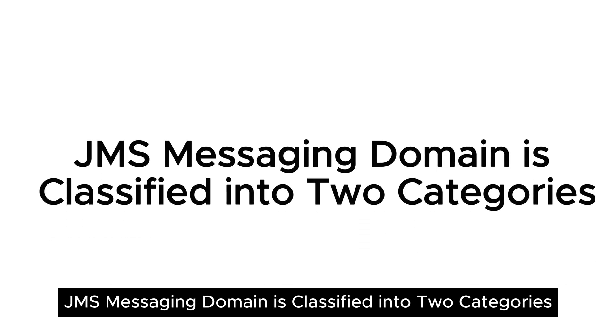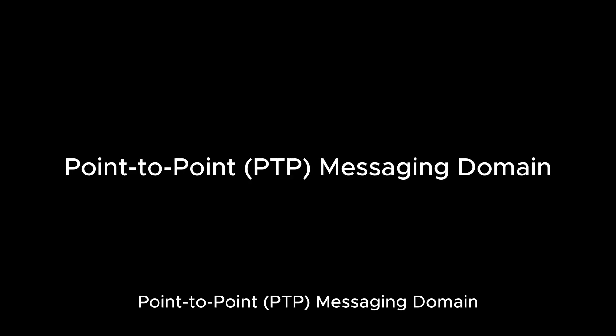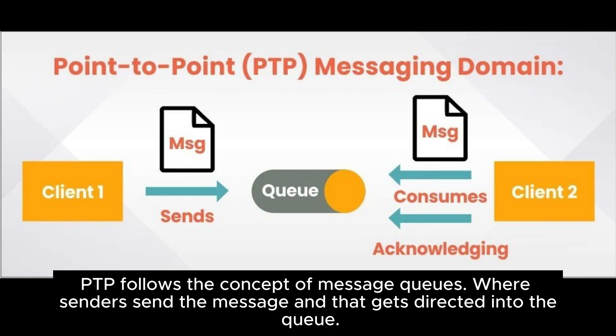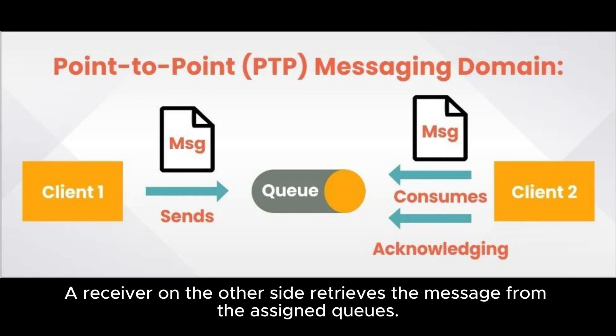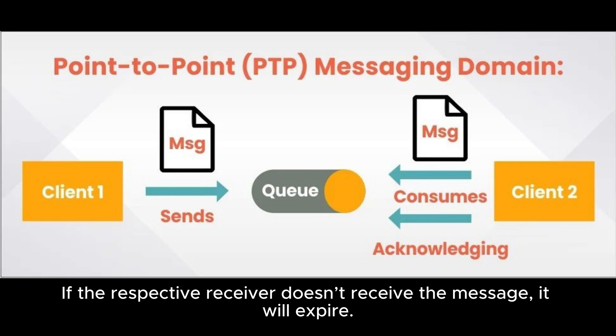JMS messaging domain is classified into two categories. The first is Point-to-point, or PTP, messaging domain. PTP follows the concept of message queues, where senders send the message and it gets directed into the queue. A receiver on the other side retrieves the message from the assigned queues. It stores each message and ensures the designated receiver picks them up. If the respective receiver doesn't receive the message, it will expire.